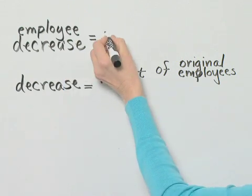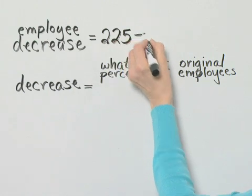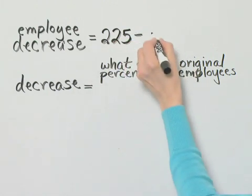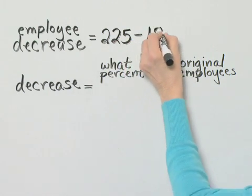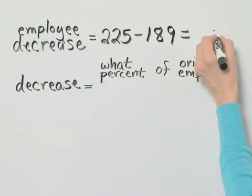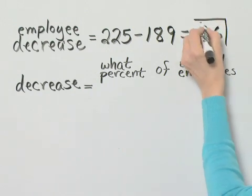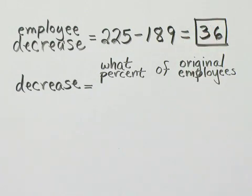Remember we had 225, and then it decreased to 189. Now I'll let you subtract. If you subtract, you'll have 36. That's the actual decrease in number of employees.